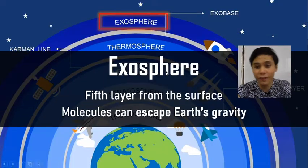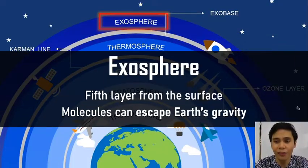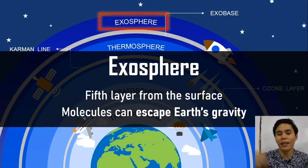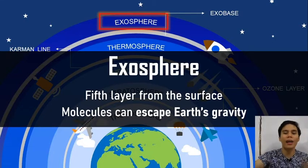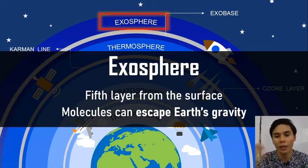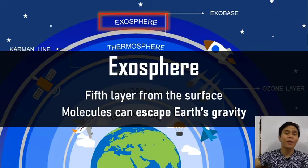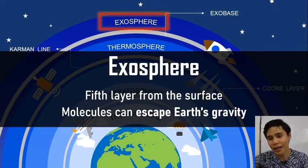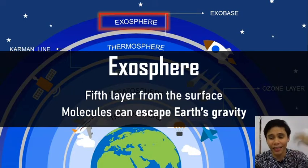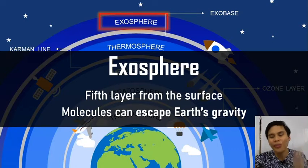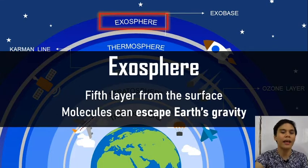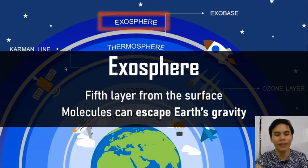Finally, we have the exosphere — the fifth layer from the surface. It's basically the layer where air molecules can escape Earth's gravity. There are so few air molecules in the exosphere that even though the temperature there is technically very high — in the thousands of degrees Celsius — you would still feel cold there because there are very few, very rare air molecules to actually make you feel that temperature. That's the exosphere, the last layer of the atmosphere.